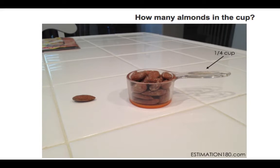Our next activity is from Estimation 180. You can find various activities there that involve real-life estimation. For this activity, I want you to estimate how many almonds are in the cup. Recognize that this is a one-fourth cup, not a full cup. If you have a one-fourth measuring cup in your house, you can pause the video and use it as a reference. I'm going to say probably maybe 35 almonds will fit into the one-fourth measuring cup.